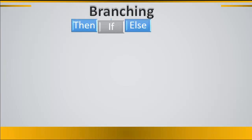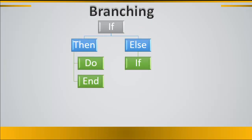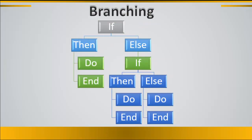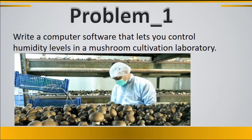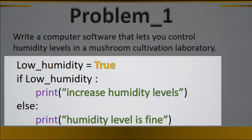Conditional commands are also called branching. Depending on the complexity of your software, you can have different branched conditions. An example is if you would like to write a computer software that controls humidity levels in a mushroom cultivation laboratory. The code would be: if low humidity is true, print 'increase humidity levels', else print 'humidity level is fine'.